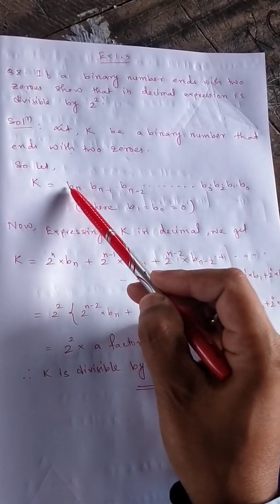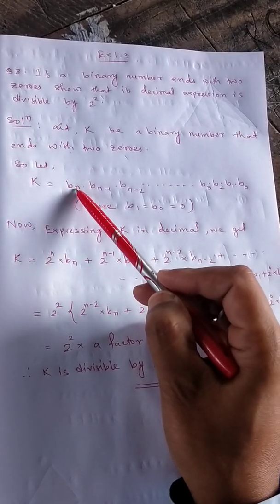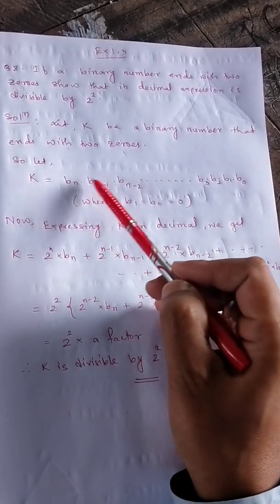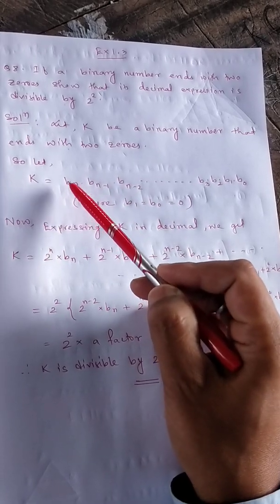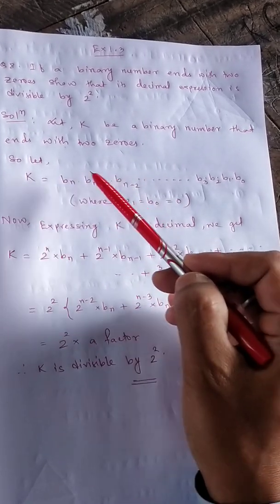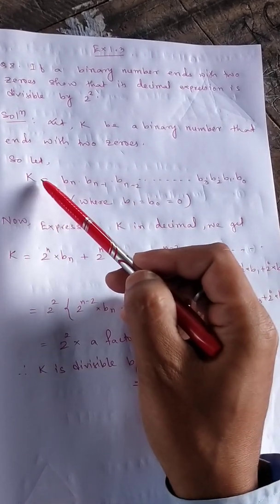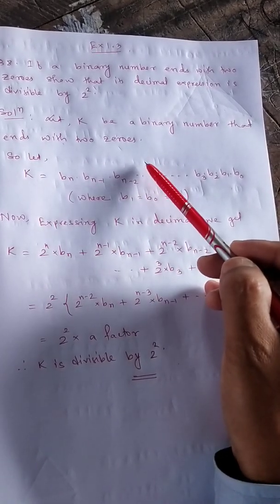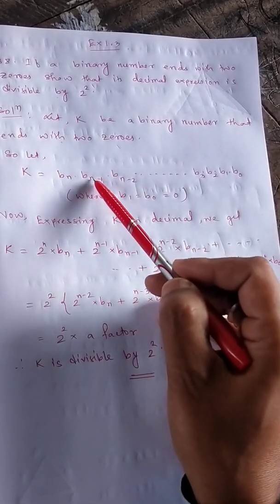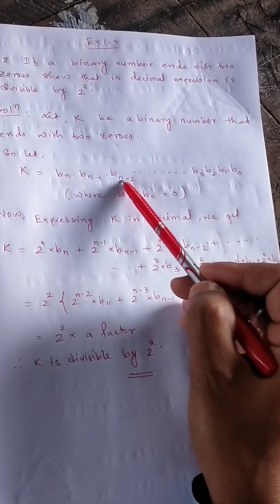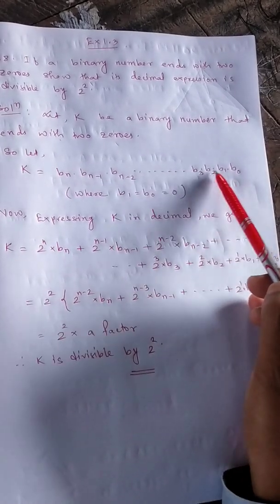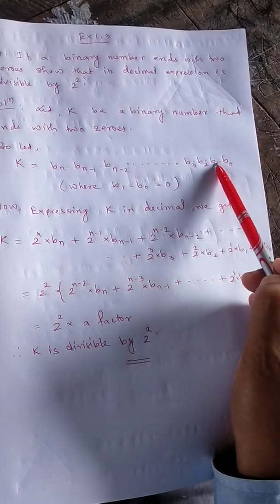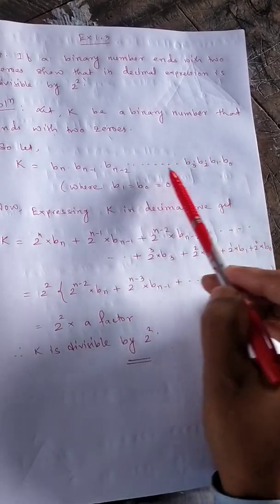Since it's binary, we write k with positional digits b_n, b_(n-1) — decreasing. Suppose at the tens place we have a digit, then the ninth place has one or zero, then the eighth place has one or zero, and so on — decreasing: b_n, b_(n-1), b_(n-2), and continuing down to b_3, b_2, b_1, b_0.